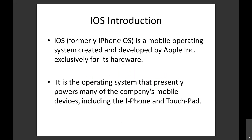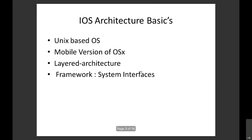iOS basically refers to iPhone OS. It was developed in 2007 for iPhone, iPod Touch, and iPad devices. It is an operating system that only works on Apple hardware and is only related to Apple's ecosystem. It's not open source, so it's a bit complex, and we can say it's more secure compared to Android.